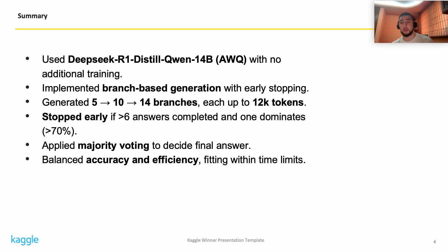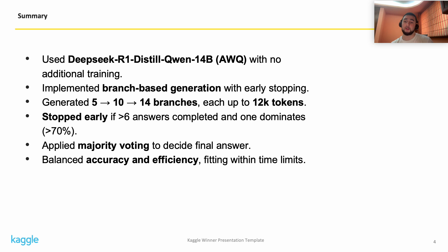Here's a brief summary of my approach. I used DeepSeek R1 distilled version by Qwen, 14 billion AWQ, as the model with no additional training. The core idea is branch-based generation with early stopping. Initially I generated five branches, expanded to 10, and in the end to 40 branches, each up to 12k tokens. If more than six answers finished and one answer dominated with over 70% agreement, generation stopped early. To decide the final answer I applied majority voting, balancing both accuracy and efficiency within the time limits.